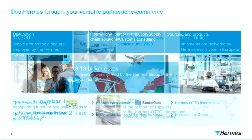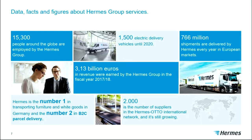Some figures: around the globe we have about 15,000 employees, 1,500 delivery vehicles, 76 million shipments. We are number one in transporting furniture — because Otto is number one in selling furniture on the internet, not IKEA as you might think. We are number two in B2C parcel delivery; of course number one is DHL, just a few meters from here.